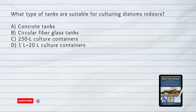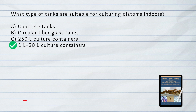What type of tanks are suitable for culturing diatoms indoors? A. Concrete tanks. B. Circular fiber glass tanks. C. 250 liter culture containers. D. 1 liter to 20 liter culture containers. Answer: D. 1 liter to 20 liter culture containers. Indoor culture of diatoms can utilize 1 liter to 20 liter culture containers before scaling up to larger concrete outdoor algal tanks.